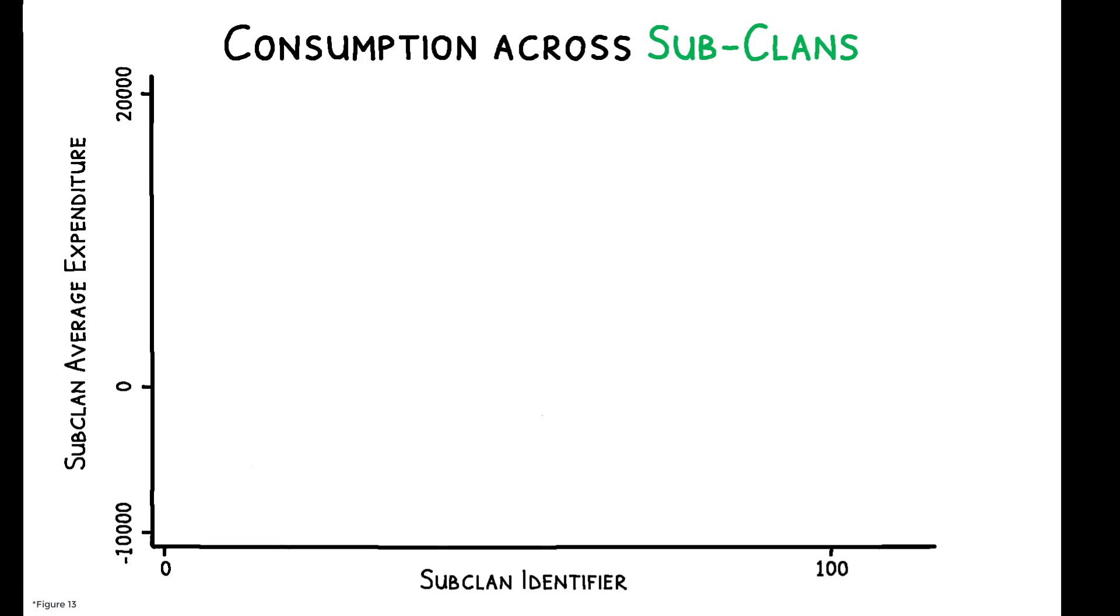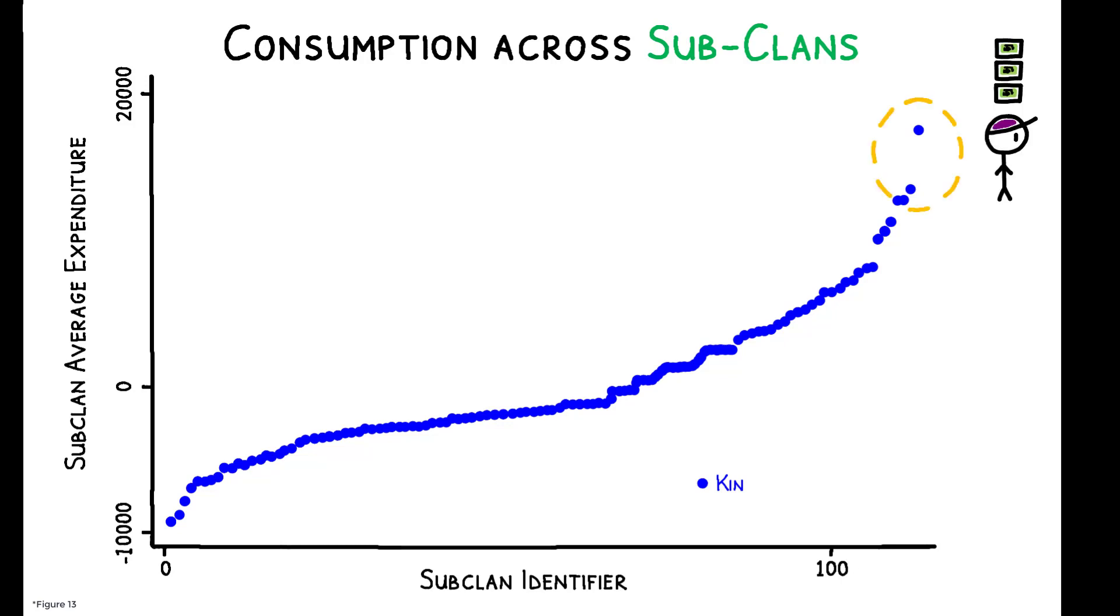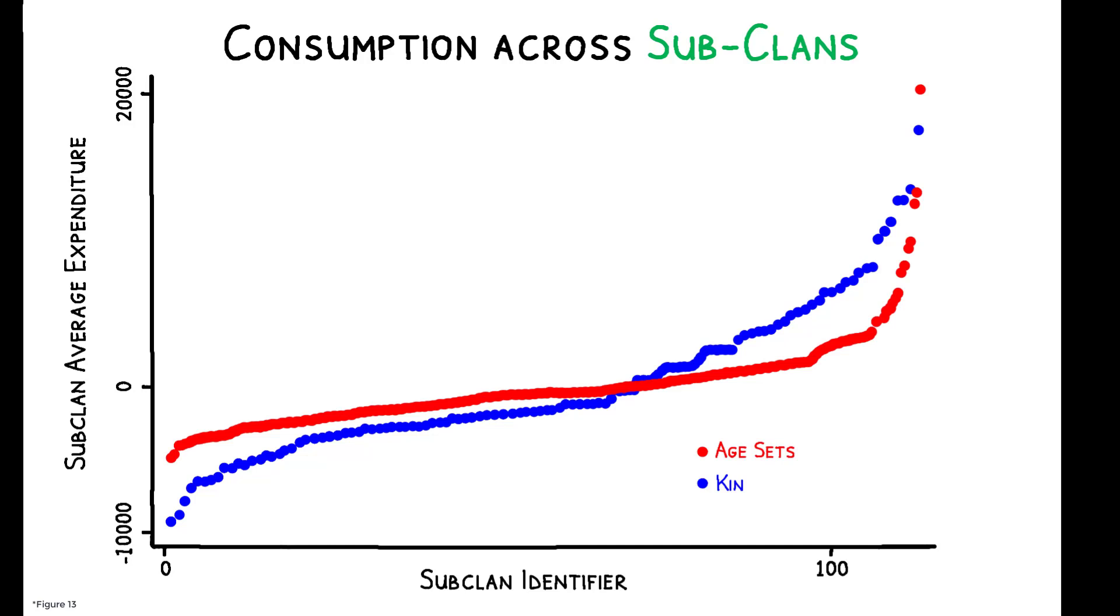Here, inequality is high in kin-based societies, and there are large consumption differences between the richest and poorest sub-clans. But because age sets cut across families, this kind of inequality is much lower in age-based societies.